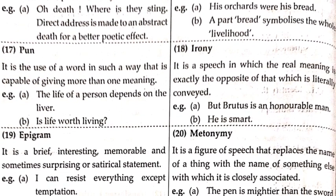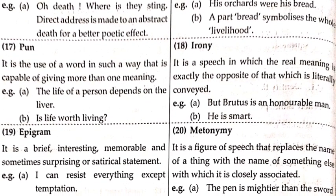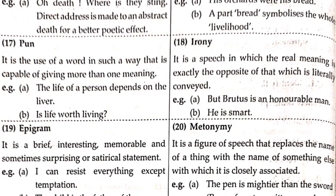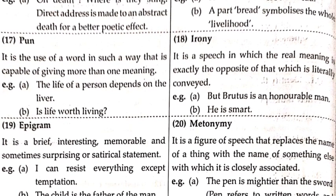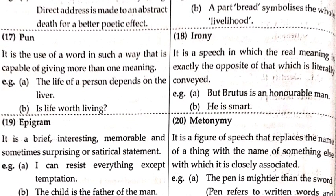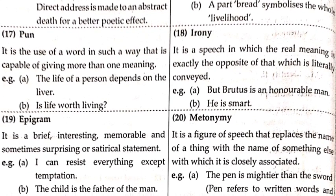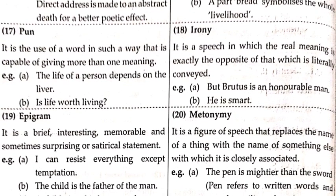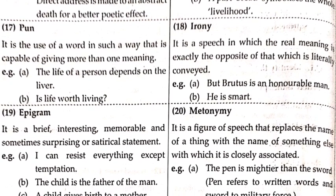The seventeenth figure of speech is pun. It is the use of a word in such a way that it is capable of giving more than one meaning — one word used in such a manner that it gives a double meaning. Example: 'The life of a person depends on the liver.' Second: 'Is life worth living now?' Both sentences can give rise to two meanings.